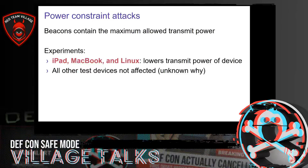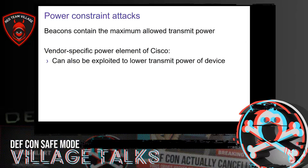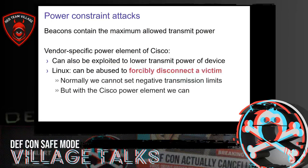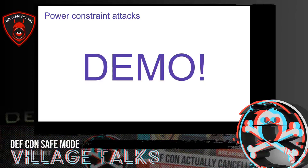We also found a minor variant of this attack against Linux. When we were inspecting the source code of the Linux kernel, we noticed that it is also able to parse a vendor-specific information element that belonged to Cisco. Normally, following the specification, we cannot set a negative maximum transmission power, but by abusing this Cisco vendor-specific element, we can. It turns out that if we are able to set a negative transmission limit, the drivers of Linux do not handle this properly, and as a result they are forcibly disconnected from the network.